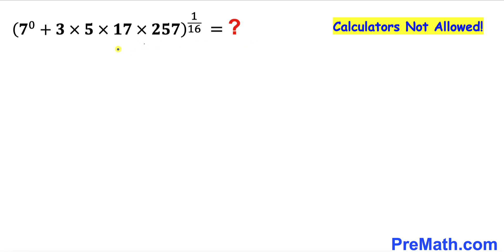In this video we are going to simplify this given interesting math problem: 7 to the power 0, plus 3 times 5 times 17 times 257, the whole thing to the power 1 divided by 16, and we are not supposed to be using calculators of any kind.